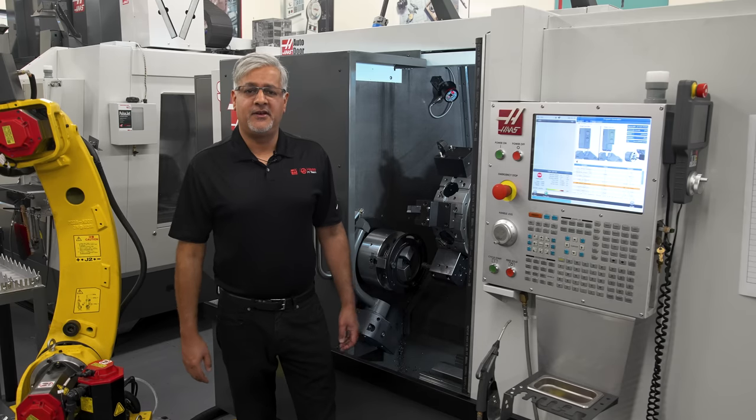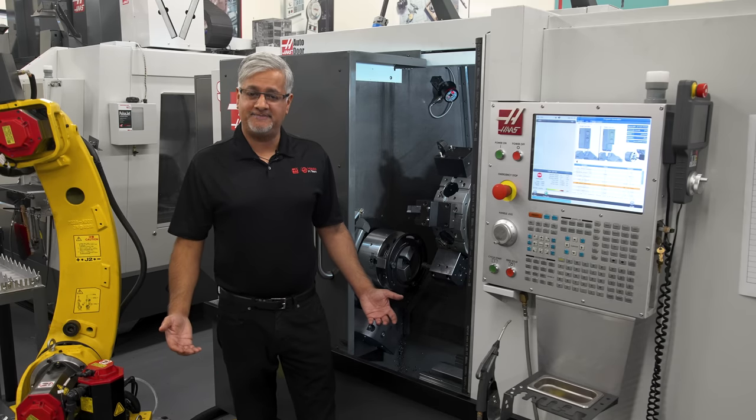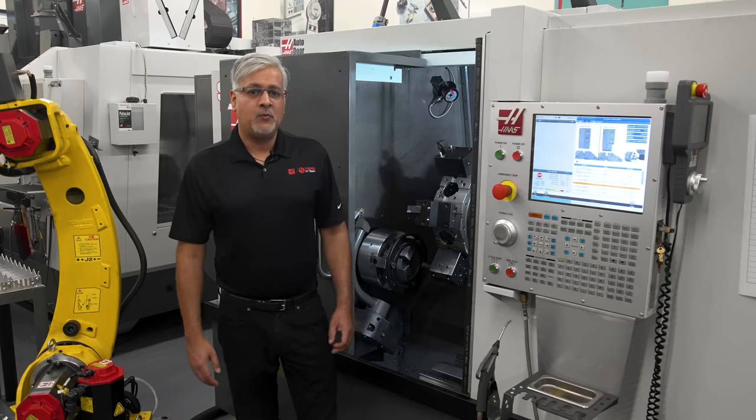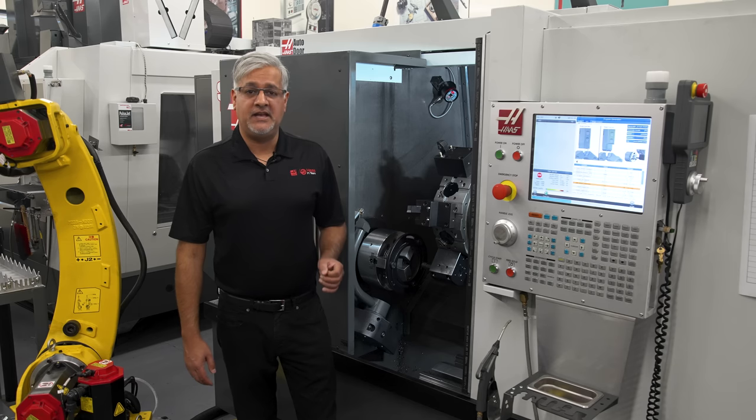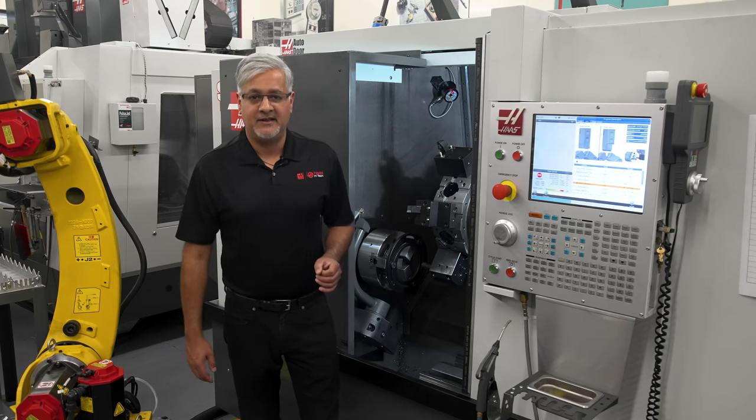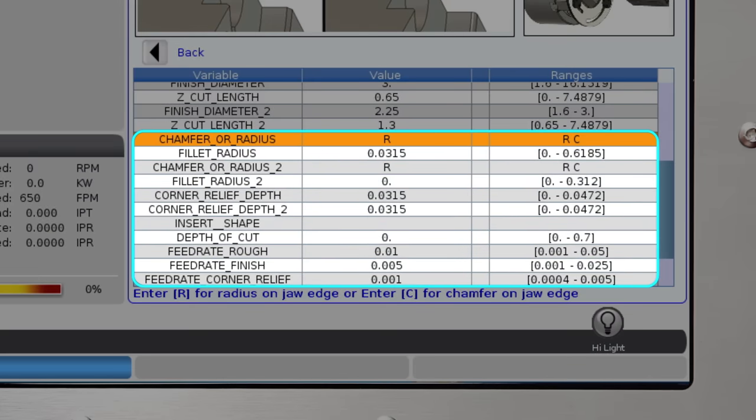We are done with the basics. We should be able to cut the jaws now, right? Not quite yet. We wanted to make this the most complete jaw-boring template possible. So we have added a few more options for features that might seem small and insignificant, but ignoring these features can cause problems with quality or productivity. And why not spend a few seconds entering these values instead of spending valuable minutes manually machining or programming them later?